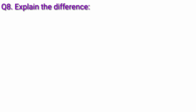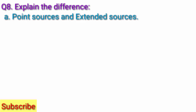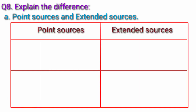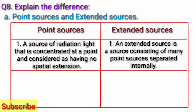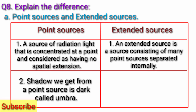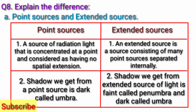Question 8. Explain the difference. Question A: Point sources and extended sources. Answer: The difference between point sources and extended sources is given below. A point source of radiation is concentrated at a point and considered as having no spatial extension. An extended source consists of many point sources separated internally. The shadow from a point source is dark, called umbra. The shadow from an extended source of light is faint, called penumbra, and also dark, called umbra.